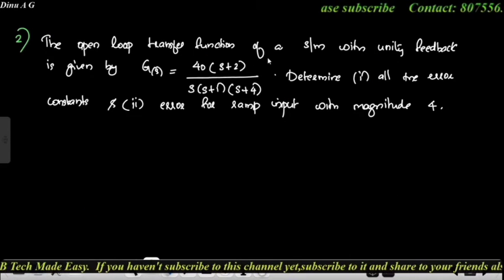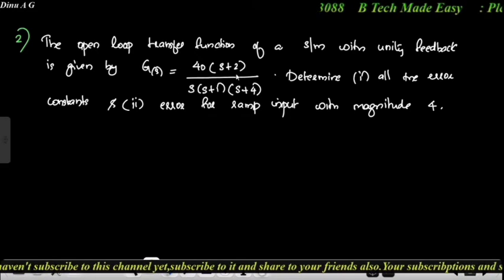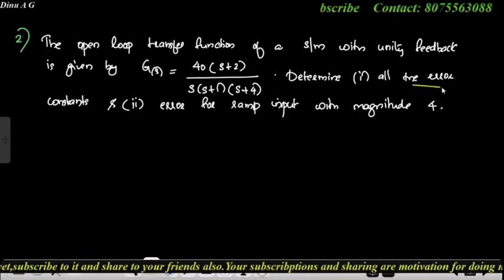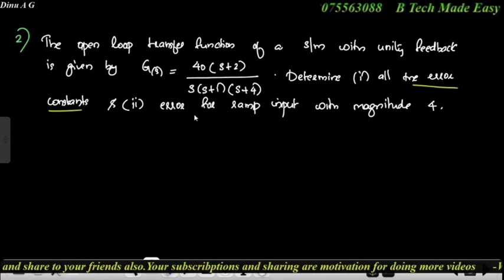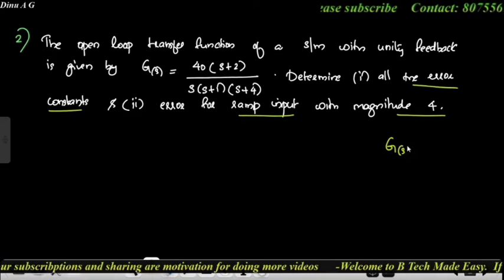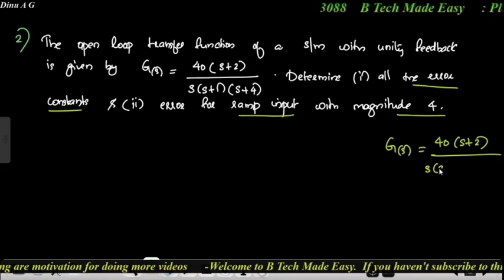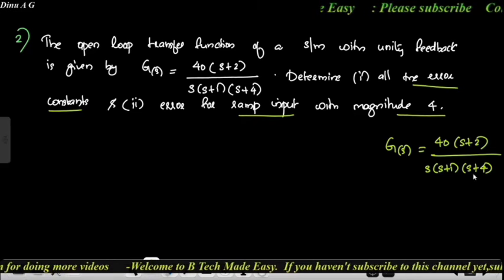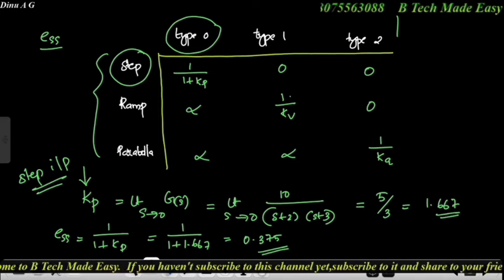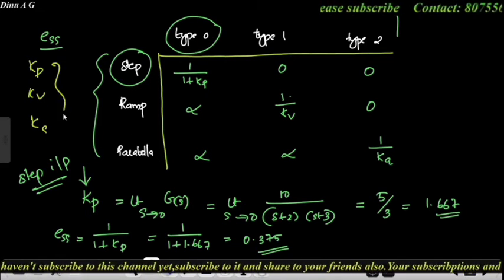Second question: the open loop transfer function of a system with unity feedback is given by G(s) = 40(s+2) / [s(s+1)(s+4)]. Determine all the error constants and the error for ramp input with magnitude 4. The error constants to find are Kp, Kv, and Ka.